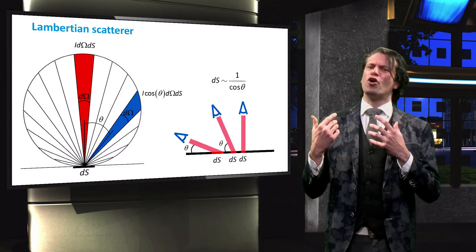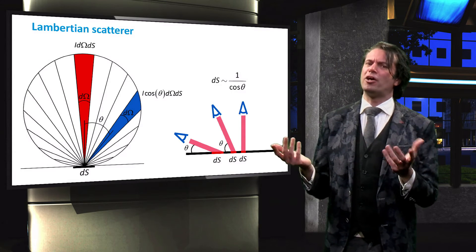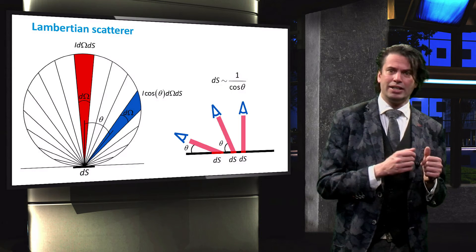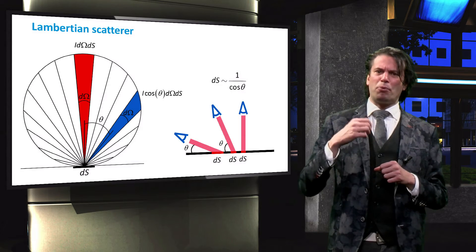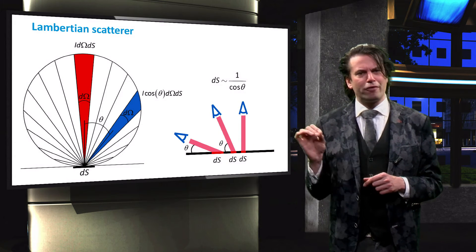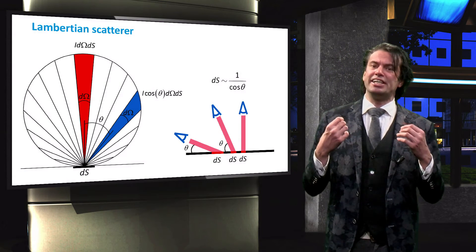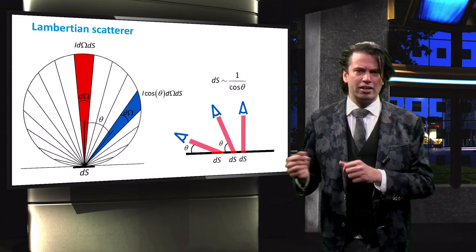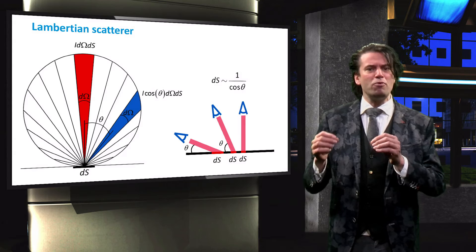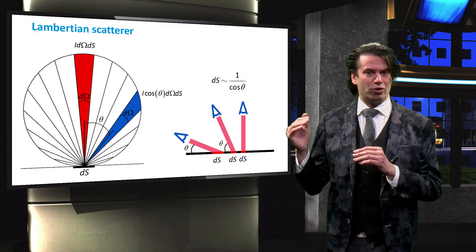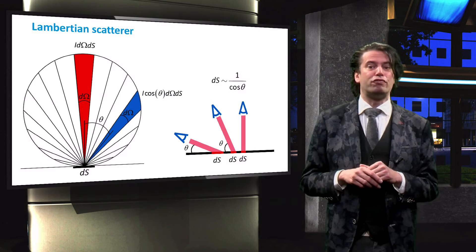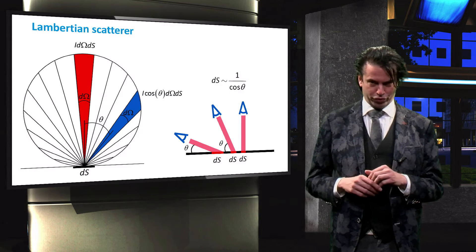However, for an observer at angle theta — indicated by the blue eye — the area ds is proportional to the inverse of cosine theta. Therefore, the power, which is the intensity times the surface area, reflected off a Lambertian scatterer will be the same when viewed from any angle. Lambertian scattering only occurs at an ideal diffusely reflecting surface.